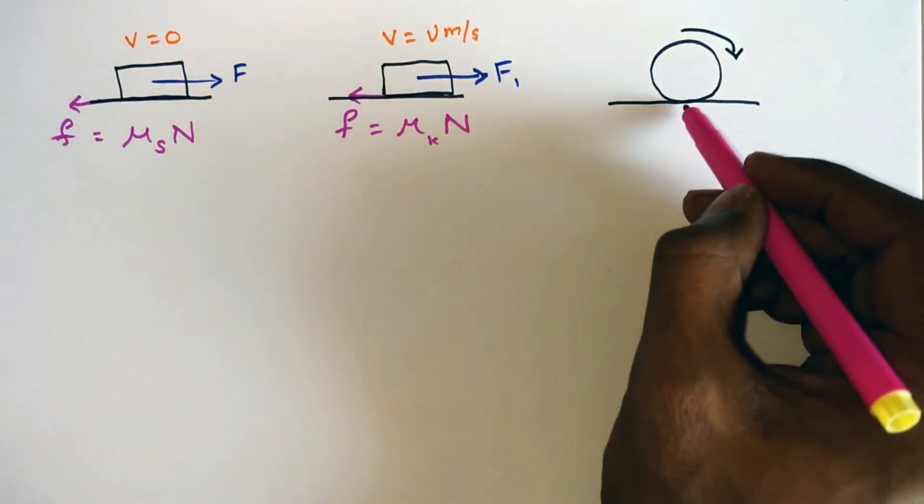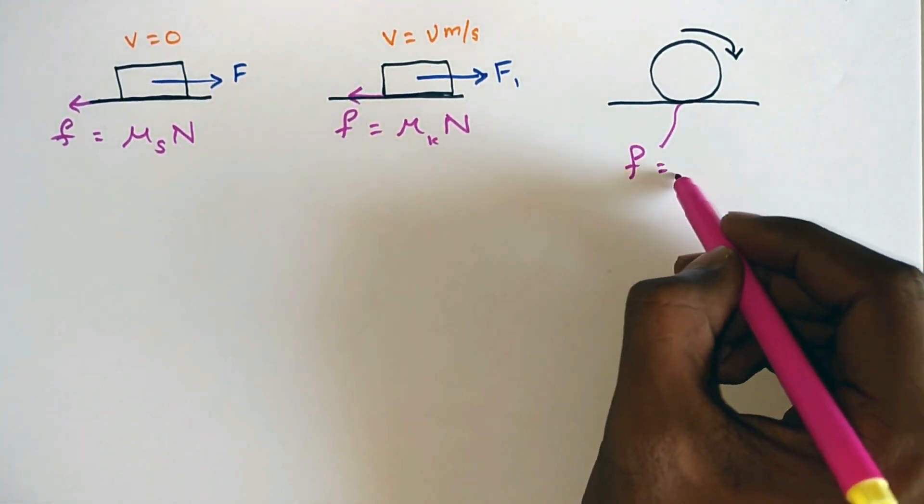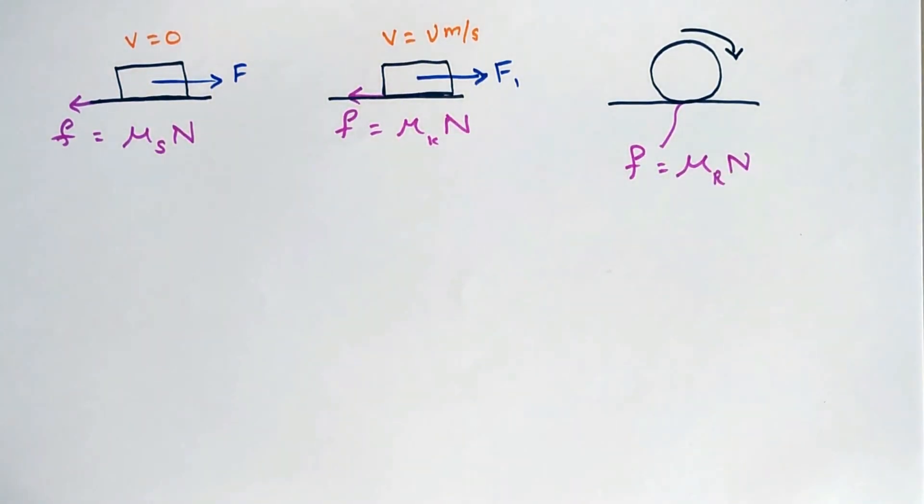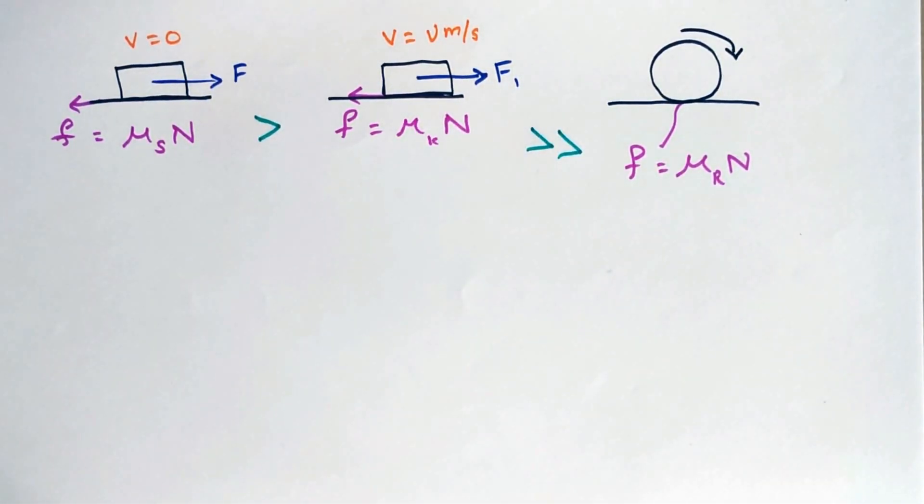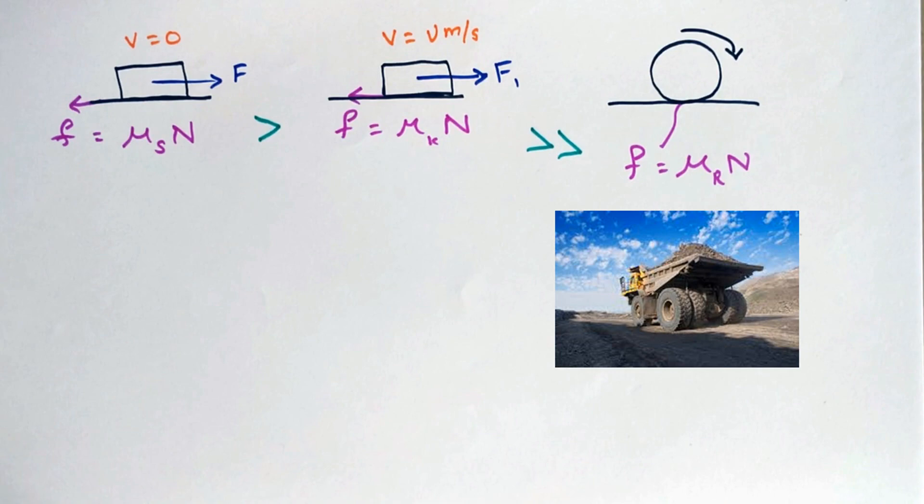And when a ball or a cylinder is rolling, then the frictional force acting to oppose its rolling is called as rolling friction. As we have seen from the graph, static friction is slightly higher than the kinetic friction. And the rolling friction is very less when compared to the kinetic friction. And this is why we use wheels in order to transport.